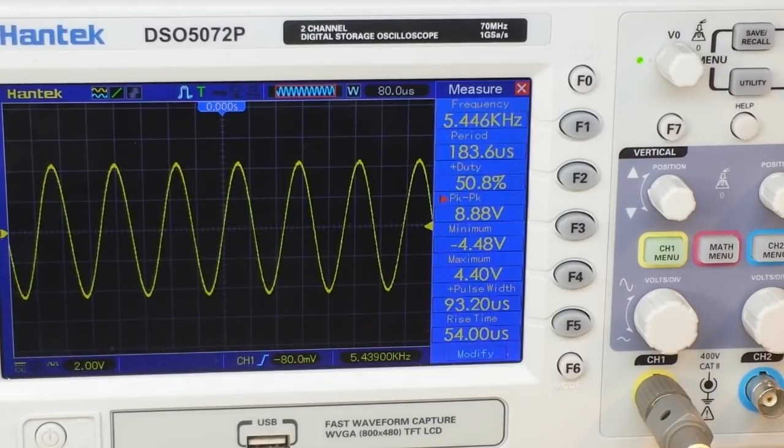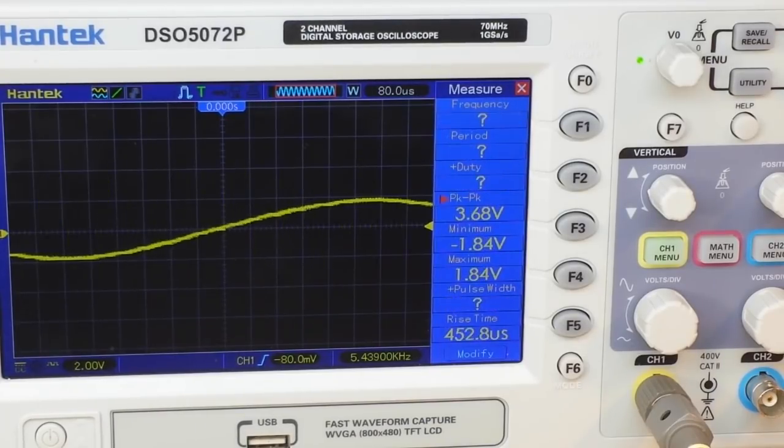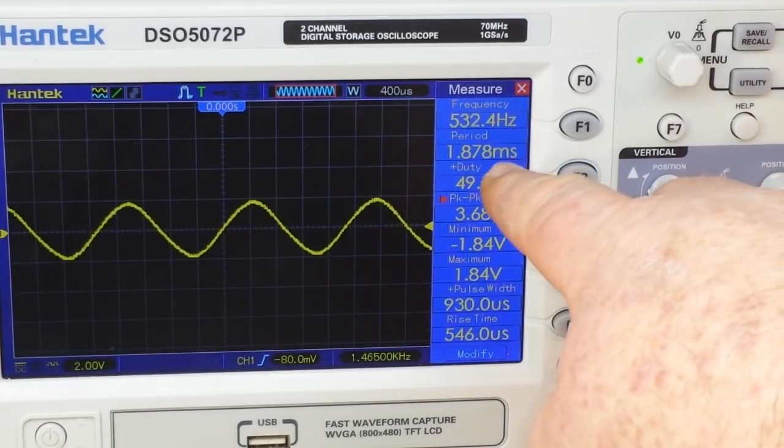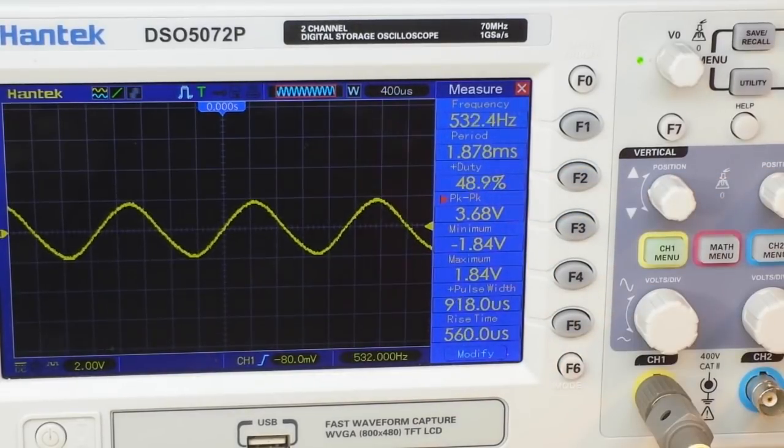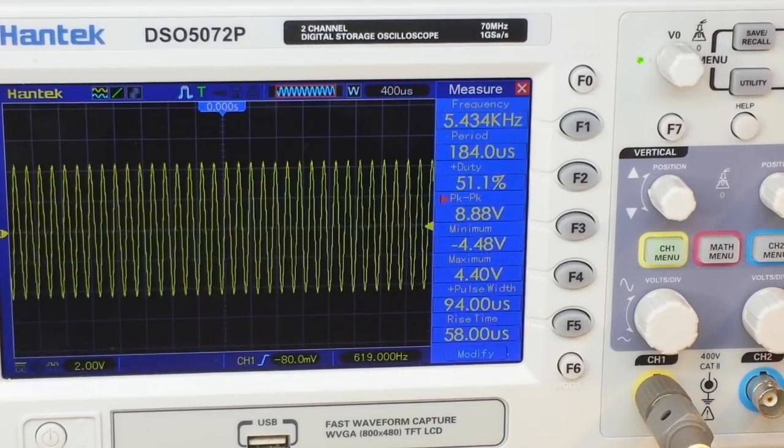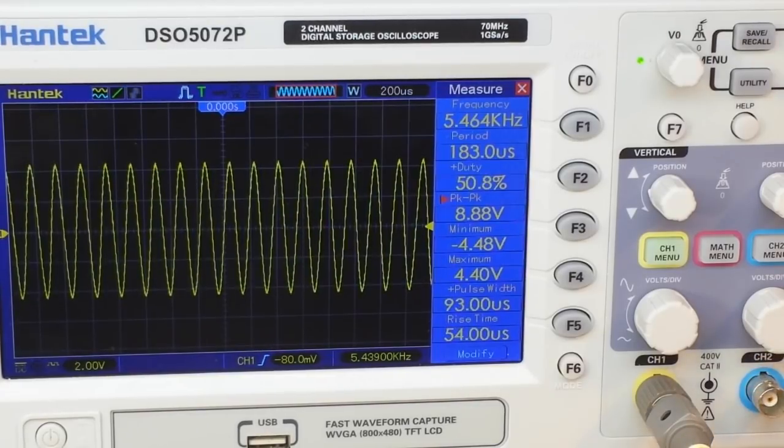Now if we drop down below that, our frequency is now 530 hertz, and our peak to peak has dropped to 3.68 volts. So we've got like a 50 percent attenuation. We go back to our 5.43 kilohertz, and you can see we're right back into it.